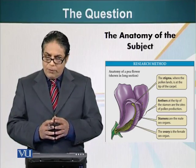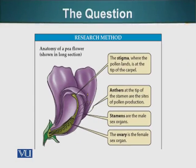Flowers are the reproductive organs of these plants. As you know, most flowers have both male and female reproductive organs. The ovary is the female sex organ — you can see it on your screen. The stigma is the part of the flower where the pollen lands and extends the tube. Pollen is the sperm equivalent of the plants. Anthers are the male sex organs, attached to stamens, which are filamentous structures. Anthers produce pollens, which can land on the stigma and fertilize the egg inside the ovary.